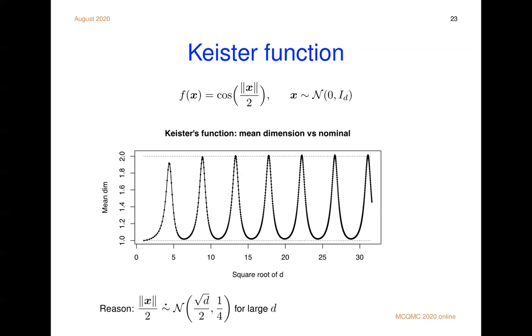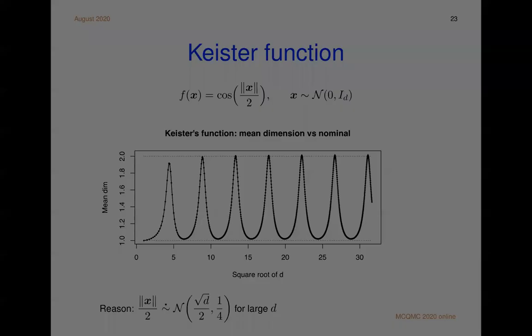So if this is centered on a linear part of the cosine function, it's just going to look linear and the mean dimension will be one. If it's centered on a mode, then it's almost purely quadratic. You square this x, you get sum of x_j squareds and so you'd have mean dimension two. So that's why that is working that way. And I'll stop share and end.